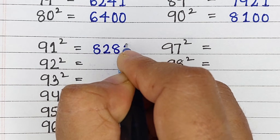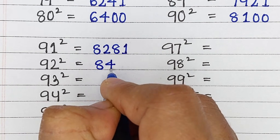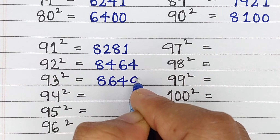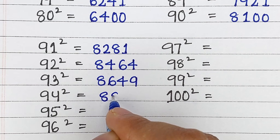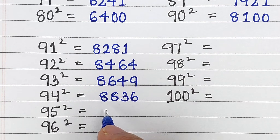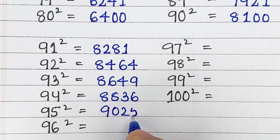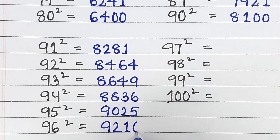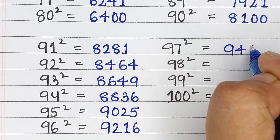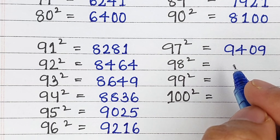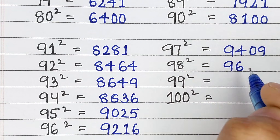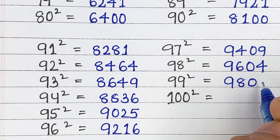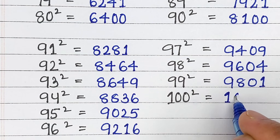Square of 91 is 8281, square of 92 is 8464, square of 93 is 8649, square of 94 is 8836, square of 95 is 9025, square of 96 is 9216, square of 97 is 9409, square of 98 is 9604, square of 99 is 9801, square of 100 is 10000.